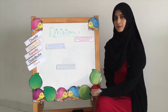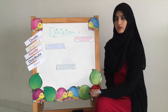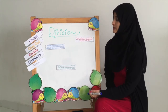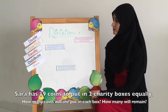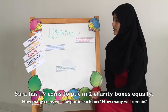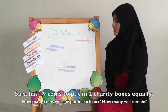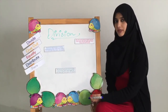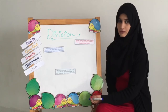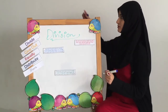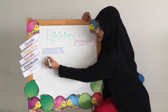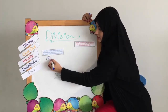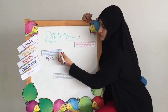We are now going to solve problem sums that have remainders. Normally, these problem sums will have the word 'remain' or 'left'. Let's read the first one. Sarah has 19 coins to put into charity boxes equally. How many coins will she put in each box? How many will remain? When we see 'how many will remain', it means there are going to be some remainders, and we need to be very careful when we are distributing to make sure the distribution is equal. The question is 19 divided by 2 because there are 2 charity boxes.